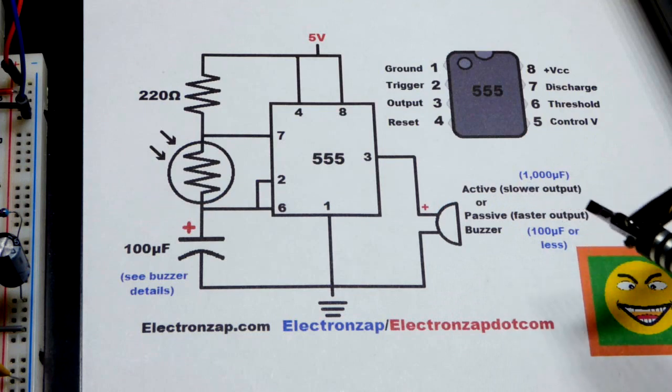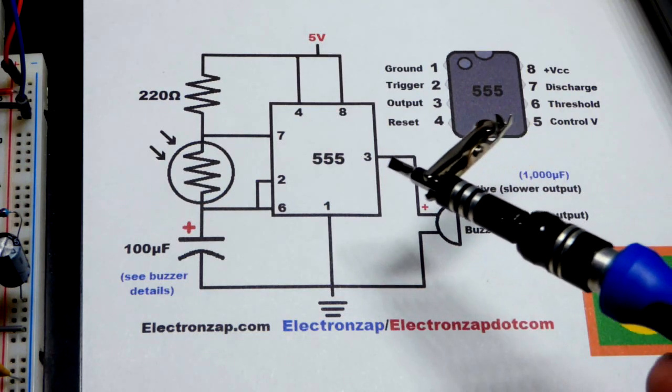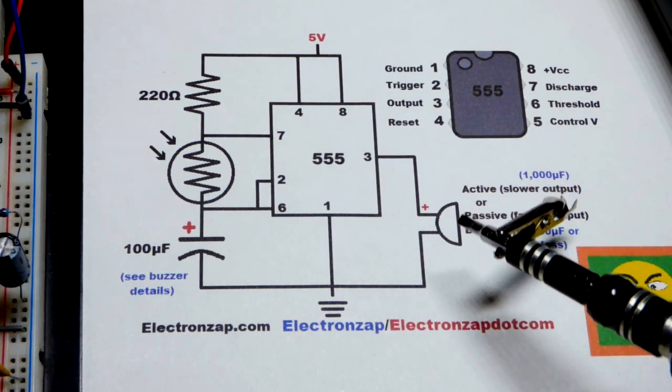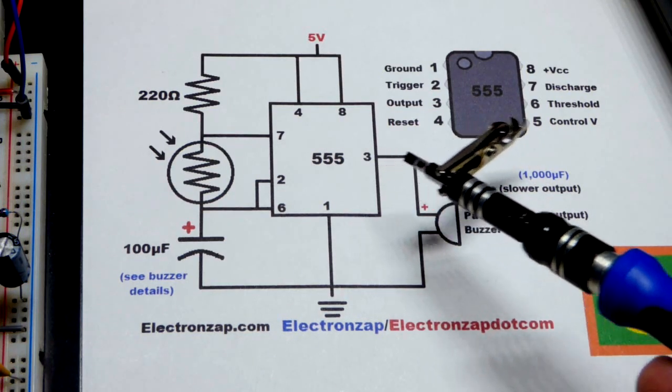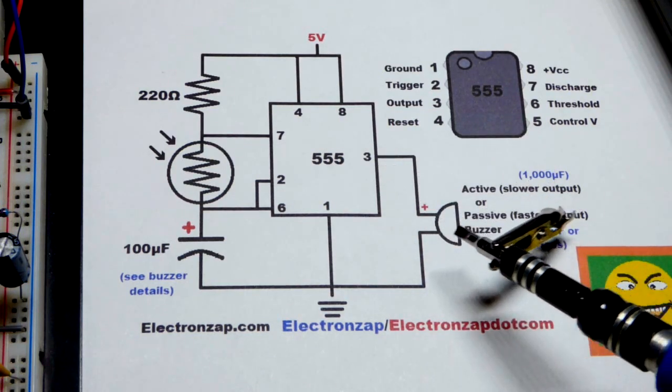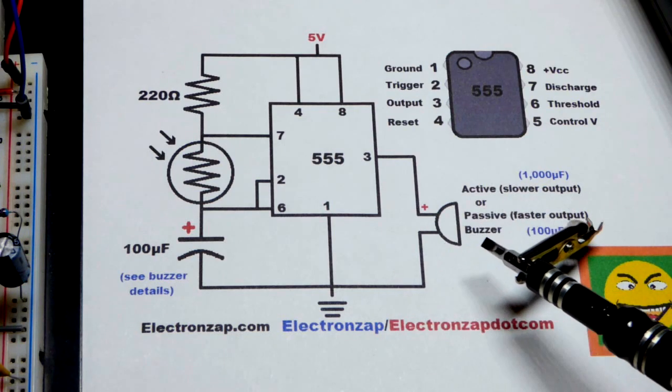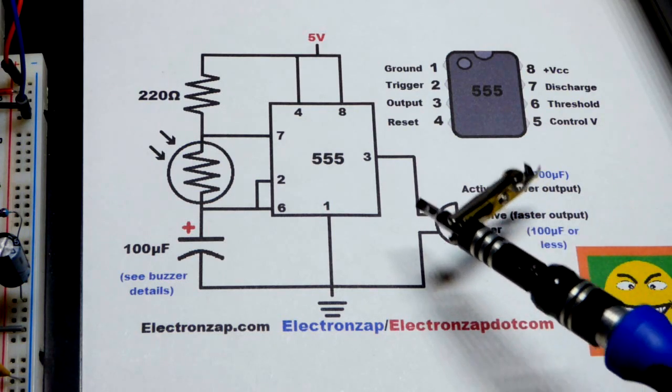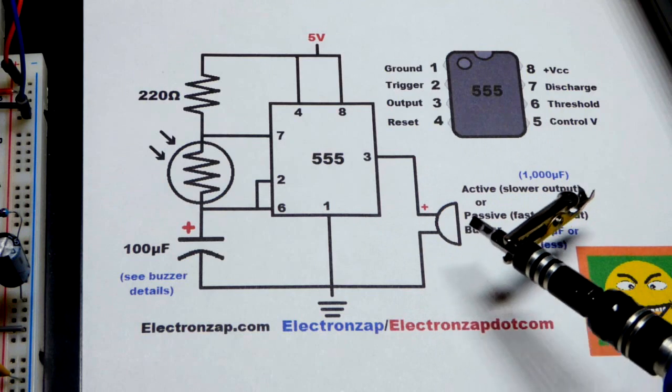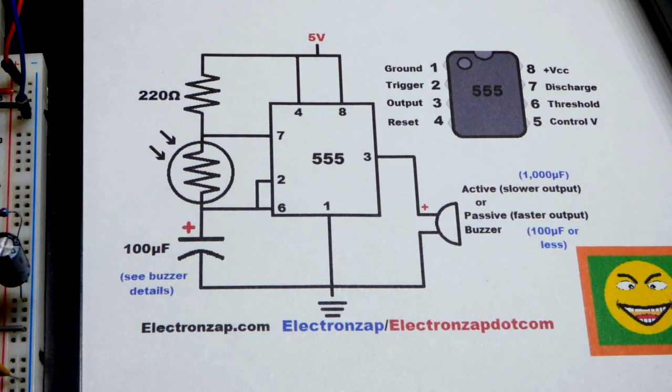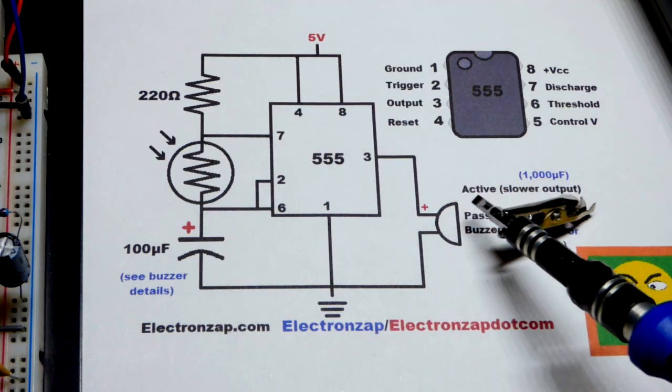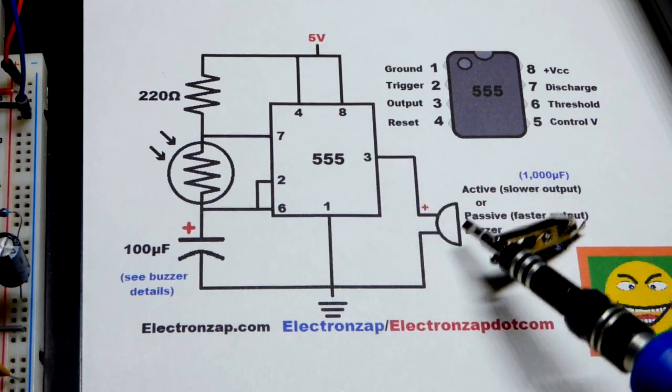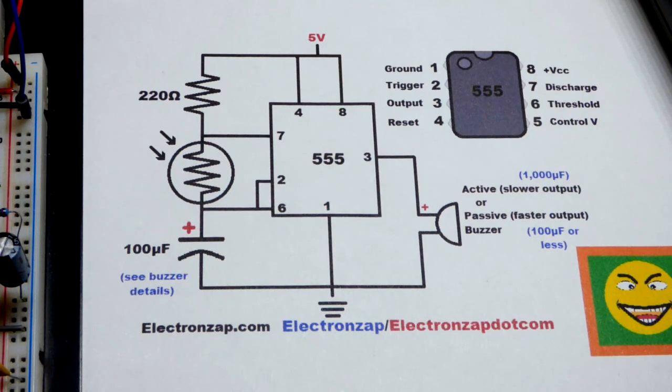We can use an active buzzer if the outputs change slowly, it'll turn it on and off. A passive buzzer when the output is changing rapidly will click at slower speeds, and then rapidly enough the passive buzzer will beep. So it makes a noise every time the output changes, whereas the active buzzer just keeps buzzing as long as power is applied.